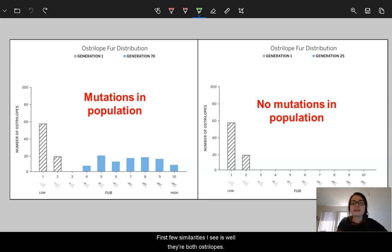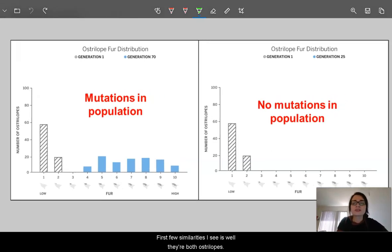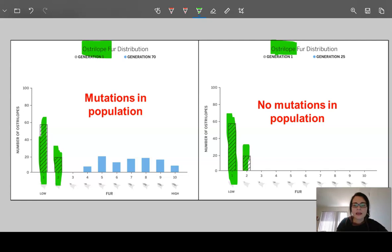First few similarities I see is, well, they're both australopes and they both had the same starting populations with traits 1 and 2, and in the end, neither of them had trait 3 either. And though it's not in the histogram, I do also know another similarity is they were both put into a cold environment.